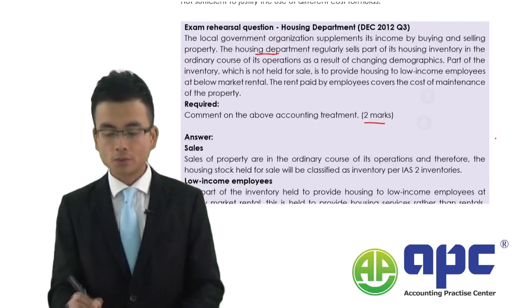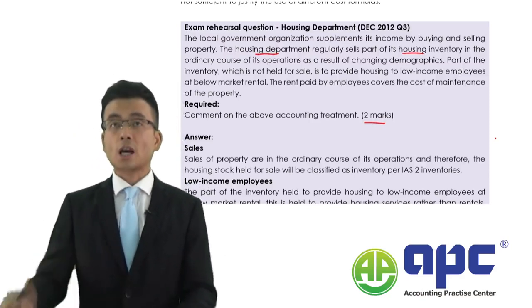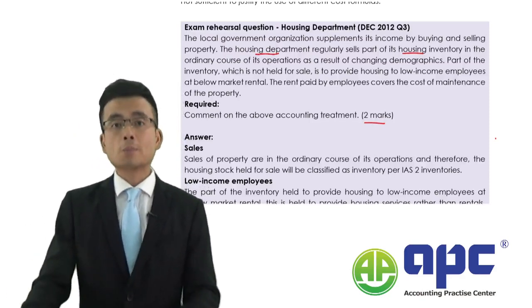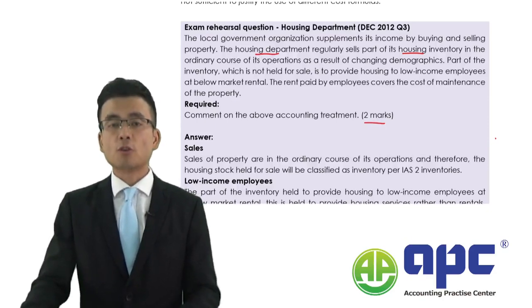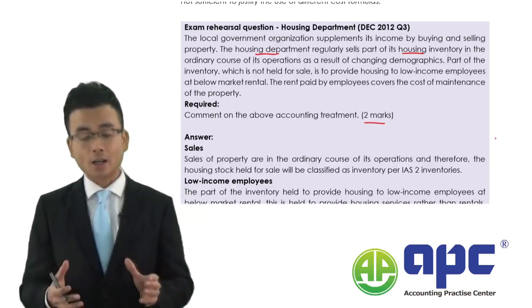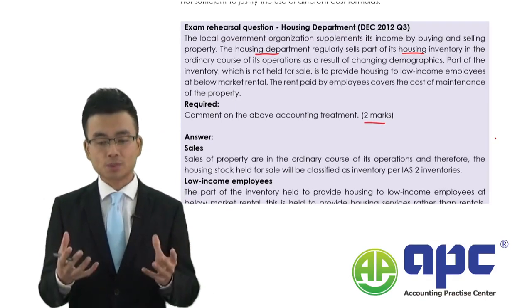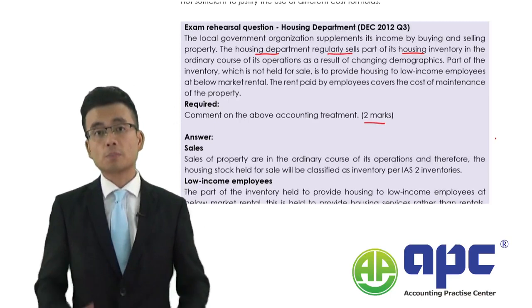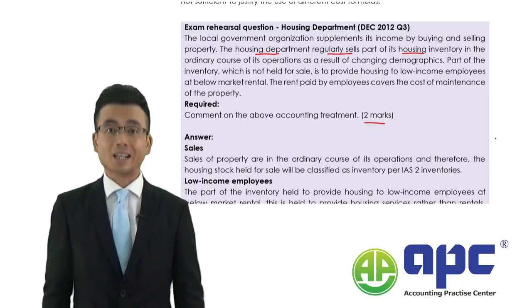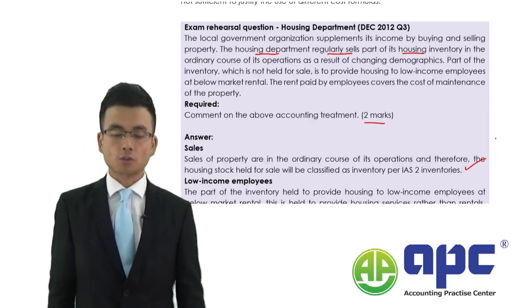The housing department sells those houses. Those houses may be accounted for as inventories if they meet the substance over form concept. Here, the form is to sell it, and the substance is that it regularly sells them — so of course it should be accounted for as inventories according to IAS No. 2. That's the first point.